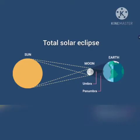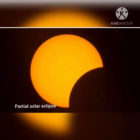Solar eclipse is formed when the moon comes between the sun and the earth. The moon's shadow falls on the surface of the earth. It occurs on a new moon day. If the sun cannot be seen at all, it is called a total solar eclipse. If only a part of it is seen, it is called a partial solar eclipse.